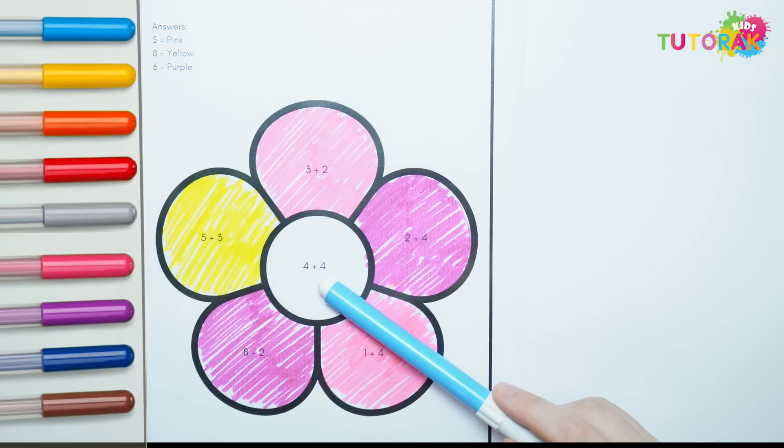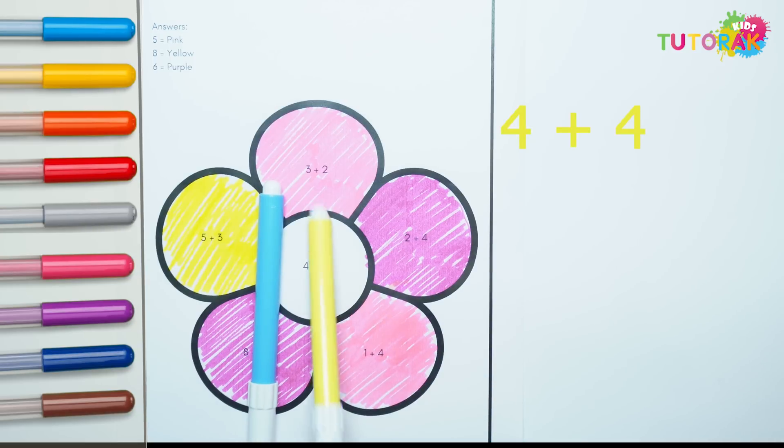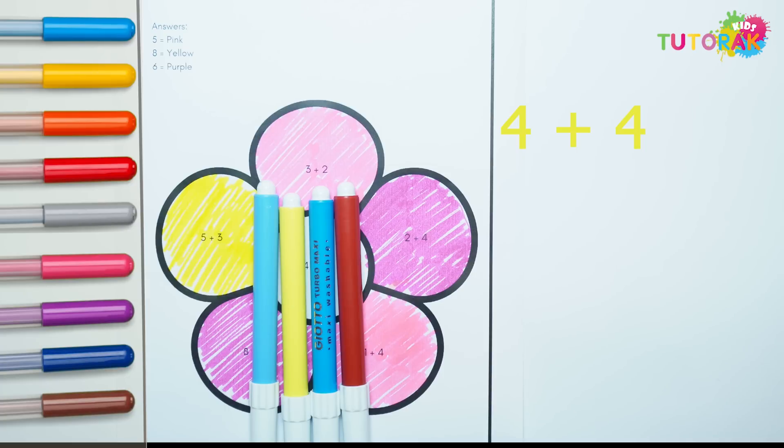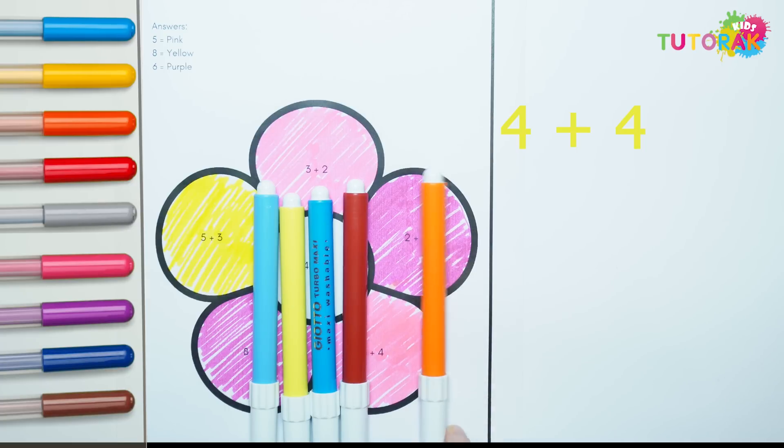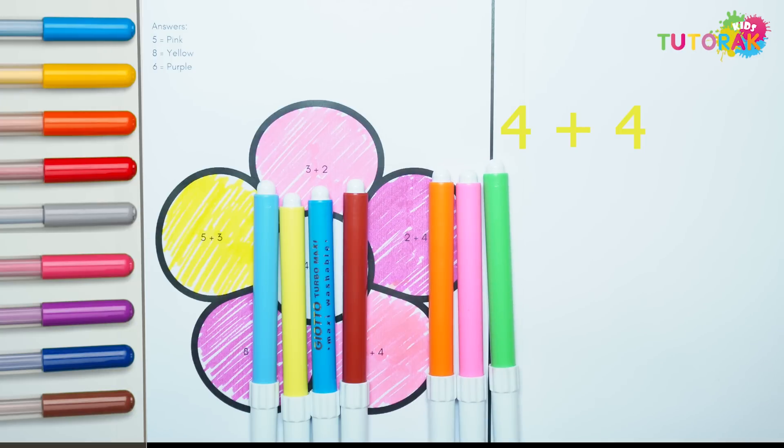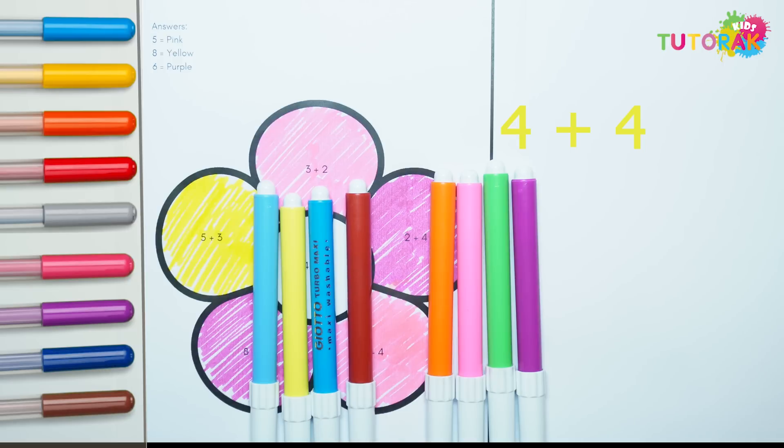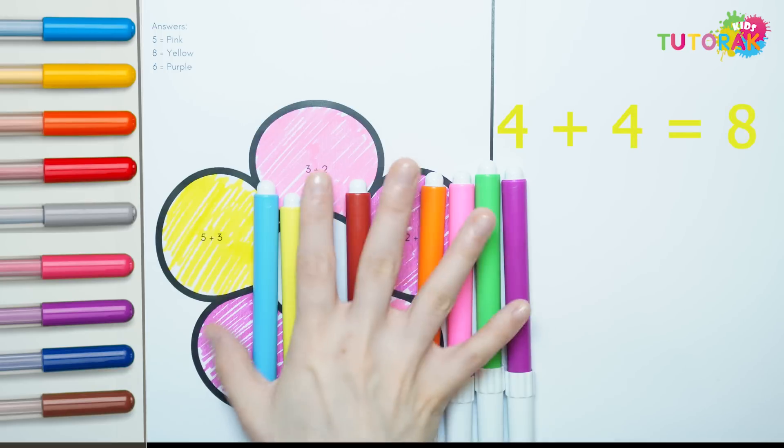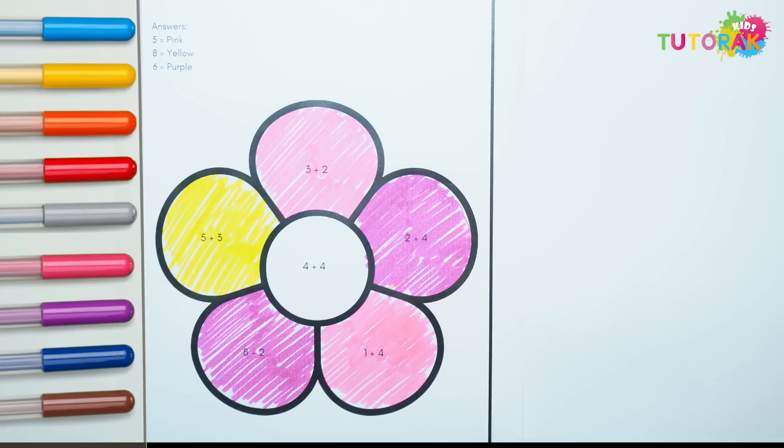The last sum, 4 plus 4. 1, 2, 3, 4 plus 1, 2, 3, 4. That's 1, 2, 3, 4, 5, 6, 7, 8. The answer is 8, and that's yellow color.